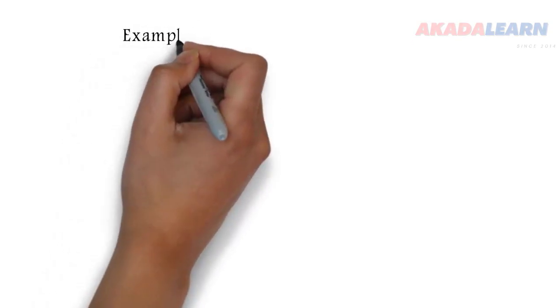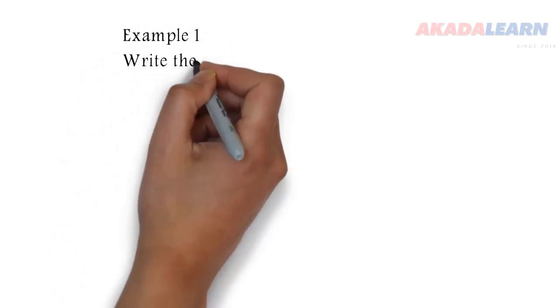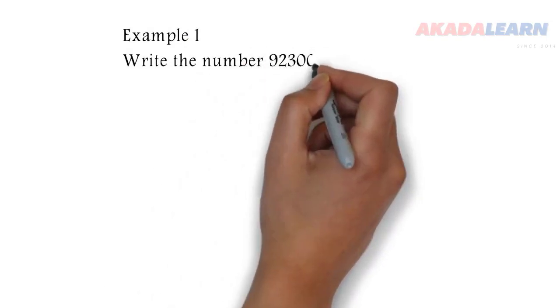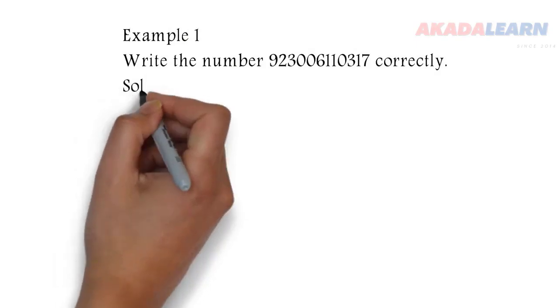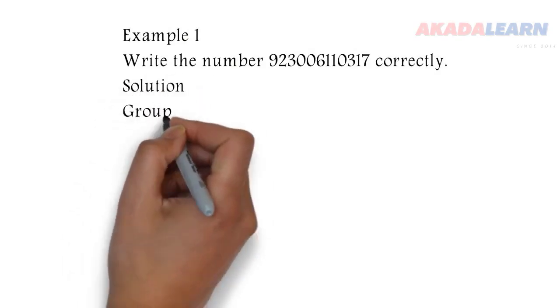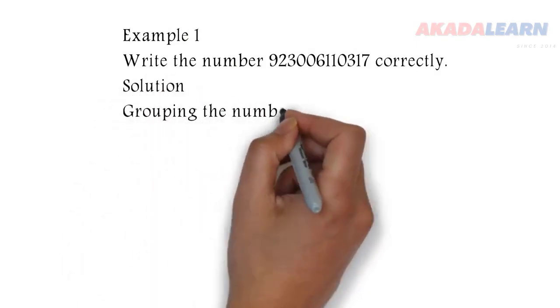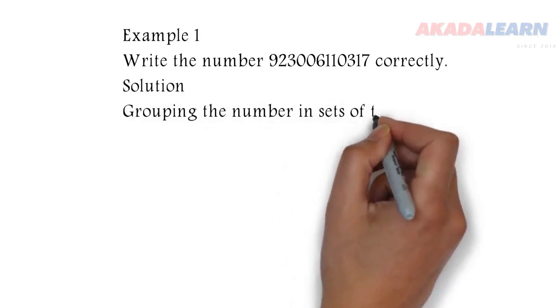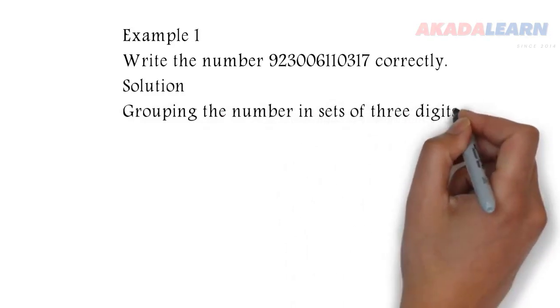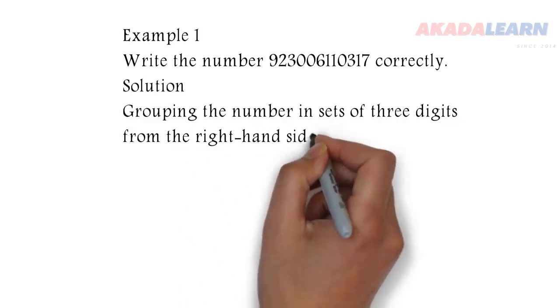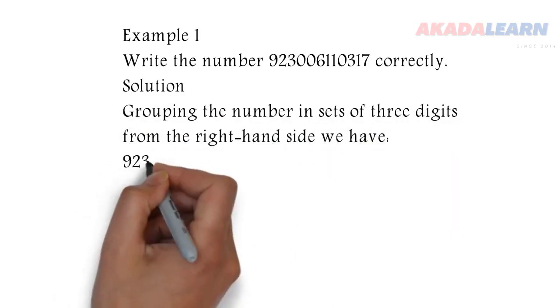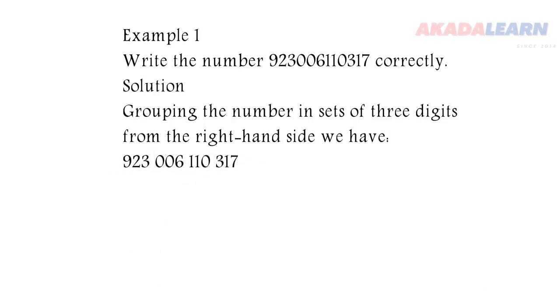Now let's see Example 1. Write the number 923006110317 correctly. Solution: Grouping the number in sets of three digits from the right-hand side, we have 923 006 110 317.